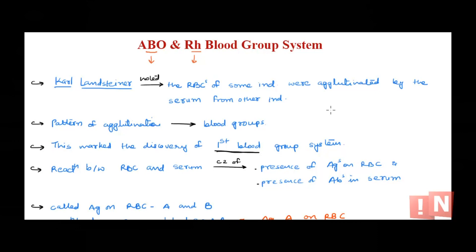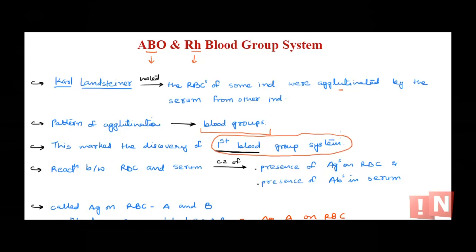At the beginning of the 20th century, an Austrian scientist named Karl Landsteiner observed that during blood transfusions, RBCs were getting agglutinated in some individuals. Blood transfusion was not always successful - it resulted in agglutination in some cases. He observed the pattern of this agglutination, which led to the discovery of different blood groups and the ABO blood grouping system.